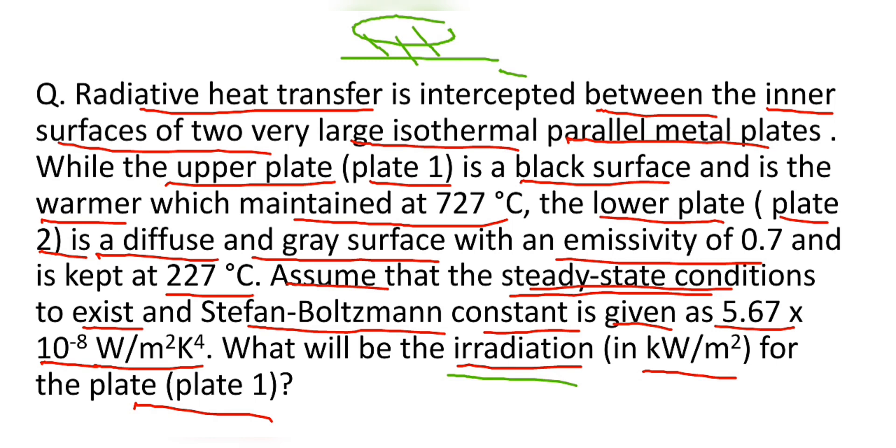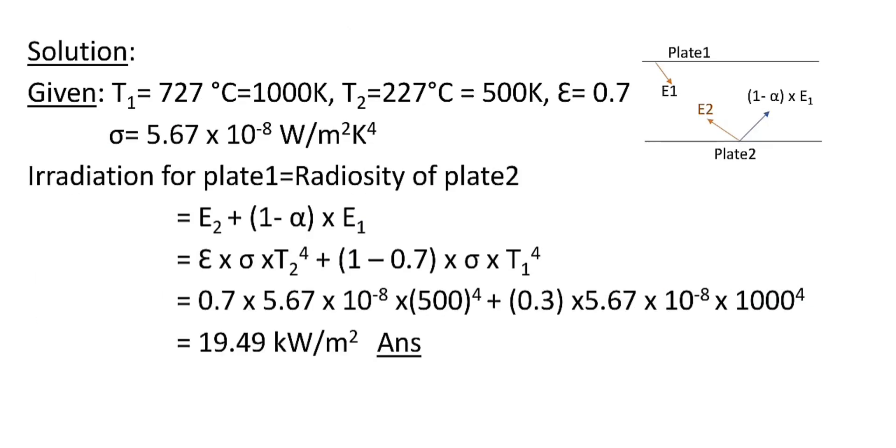Now let's go for the solution. Here T₁ is temperature of plate 1 and it is equal to 727°C, and in Kelvin it is equal to 1000 K. T₂ is temperature of plate 2 and it is 227°C, and in Kelvin 500 K.